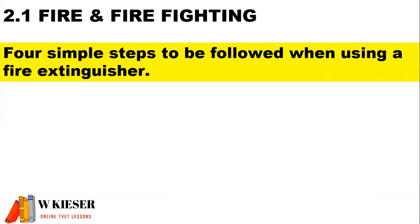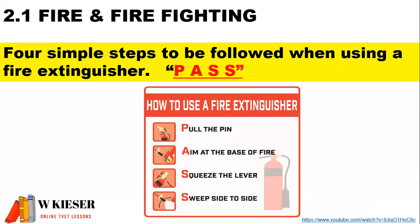Four simple steps to be followed when using a fire extinguisher. Here we use the PASS system. The first letter P is pull the pin, the second letter A is aim at the base of the fire, S for squeeze the lever, and S for sweep side to side.